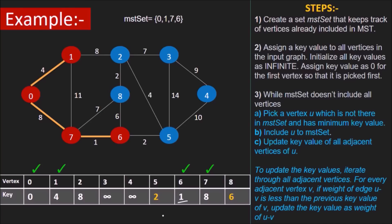Now v5 will be picked because it has the lowest key among all the vertices not in MST set. Now v5 has three adjacent vertices not in MST set, namely v2, v3, and v4. Keys of all the three will be updated.